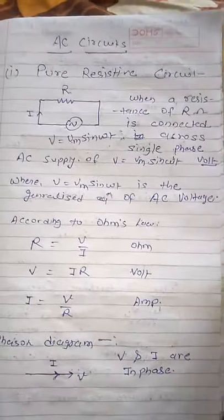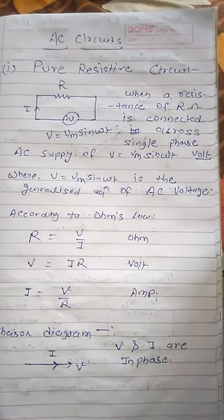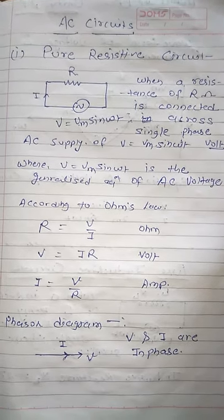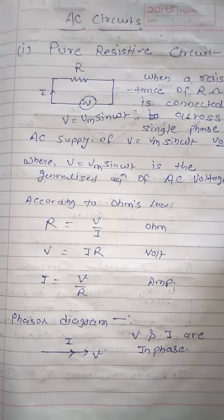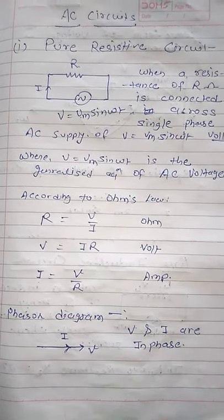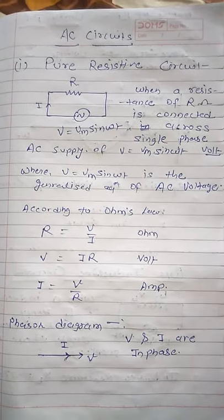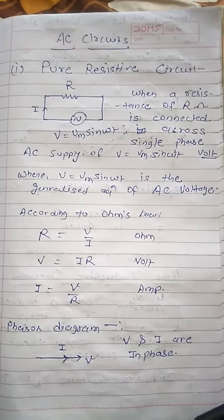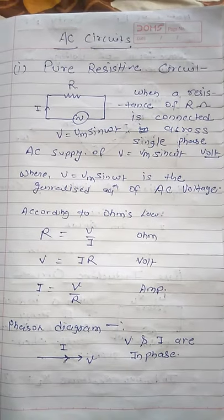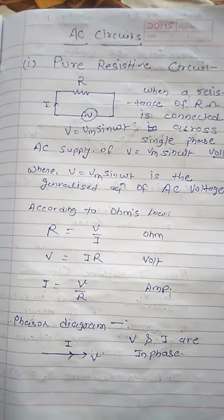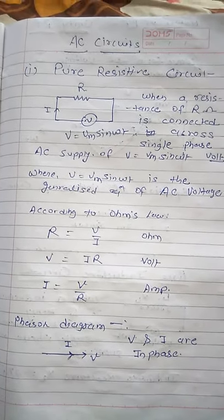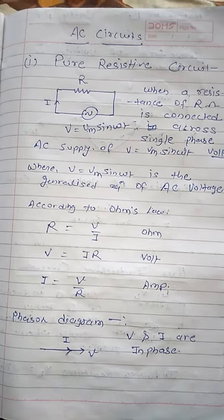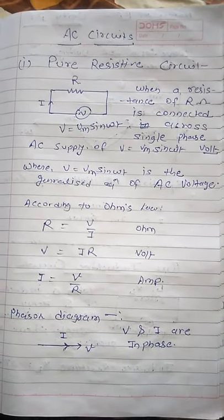Hello students. In my previous video I gave a lecture about leading and lagging quantities, and basically about phasors — leading, lagging, in-phase and out-of-phase quantities. Now we will start with the AC circuit. In AC circuit, first I will discuss pure resistive circuit, pure inductive circuit, and pure capacitive circuit, because if we know about these and their respective phasor diagrams and waveforms, we are capable of understanding further circuits like RL series, RC series, and RLC series circuits.